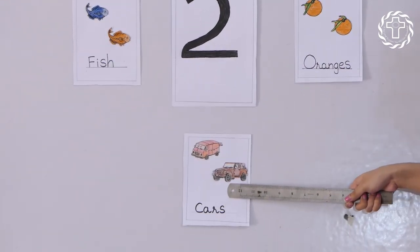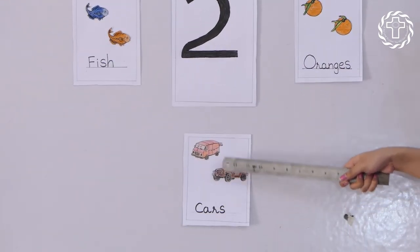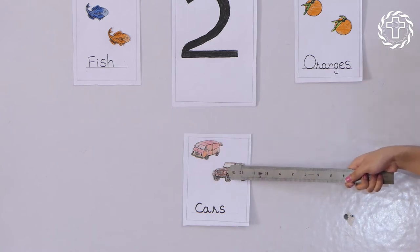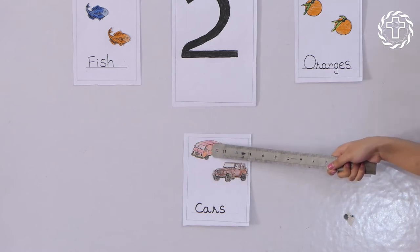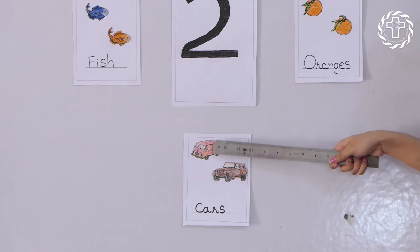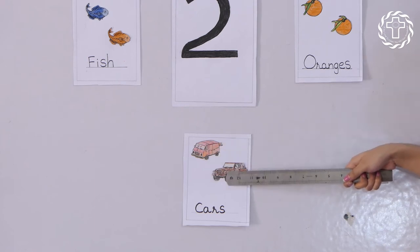Which picture is this? Tell me, how many cars are here? One, two. How many cars are here? One, two.